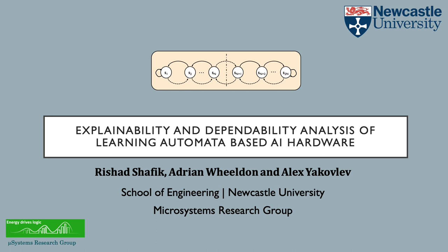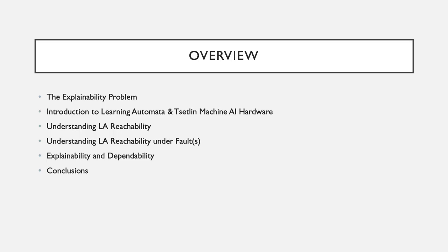So today, we will be talking about a few things. We will first introduce the concept of explainability and the problems therein. We will then draw some inspirations from the latest developments of AI hardware architectures that we are leading on, and then we will talk about how we see explainability in terms of reachability and how we can establish understanding of explainability and dependability using this new hardware architecture.